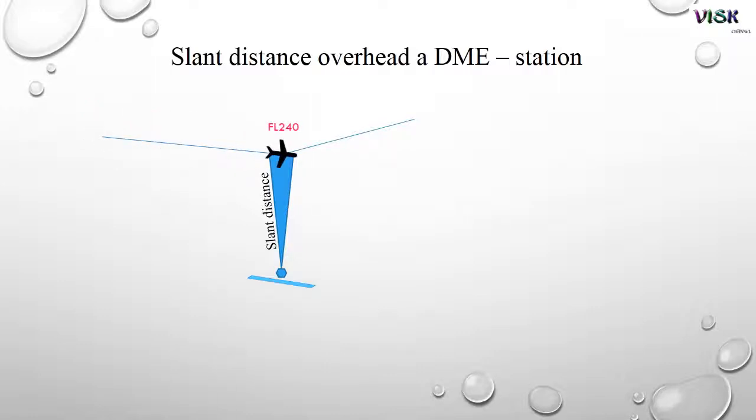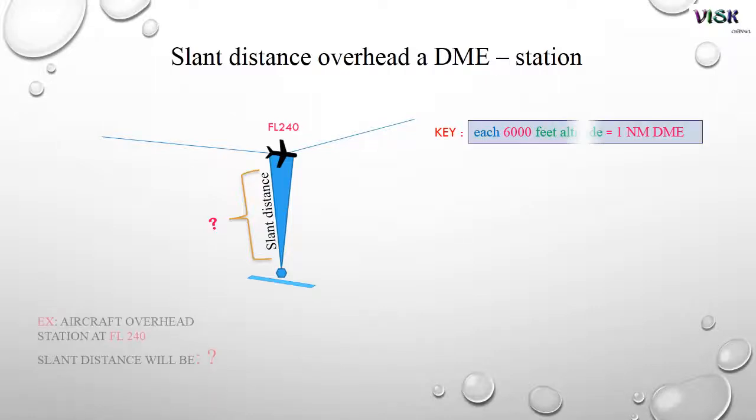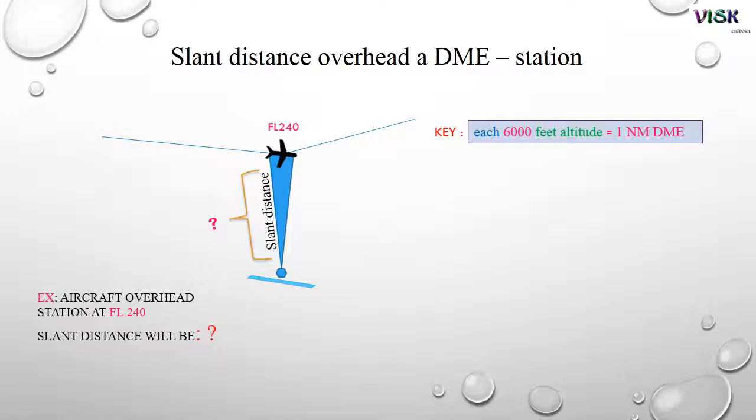Flyover station, slant distance, how many nautical miles and how to calculate. Go to the formula or the key. The key is 6000 feet altitude equals 1 nautical mile.